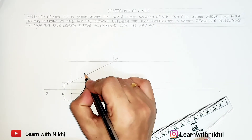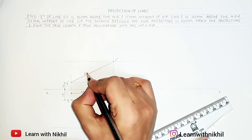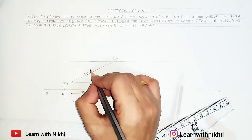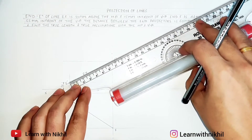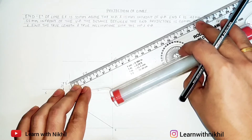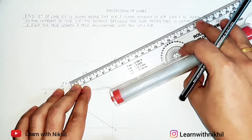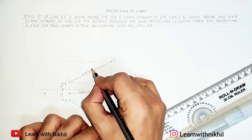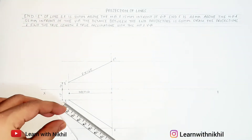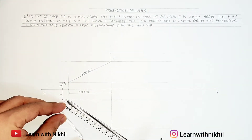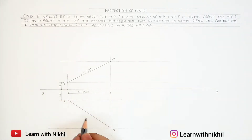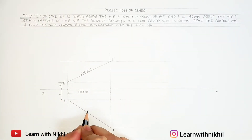So writing here front view, or you can write EL, that is elevation length. Measuring this length gives me 65 mm, so our elevation length or front view length is 65 mm. On the top view side, this length is the plan length or the top view length, which is 73 mm.